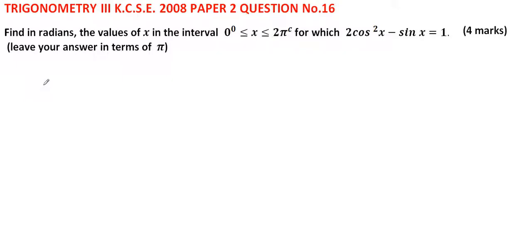for which 2cos²x - sinx = 1. You get 4 marks. Leave your answer in terms of π.